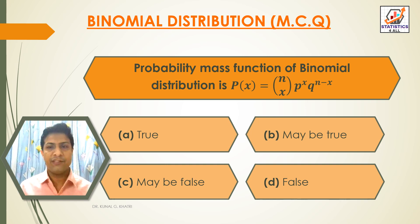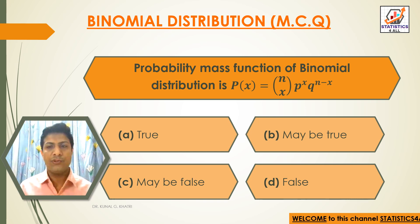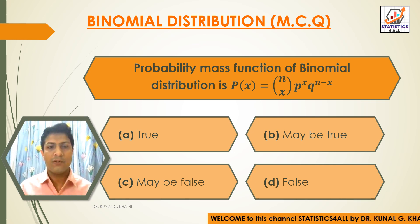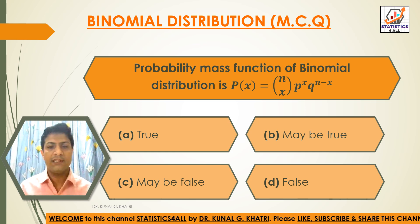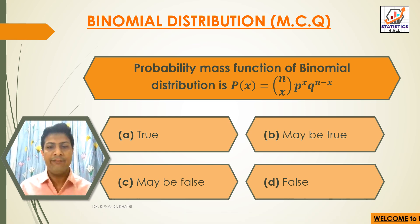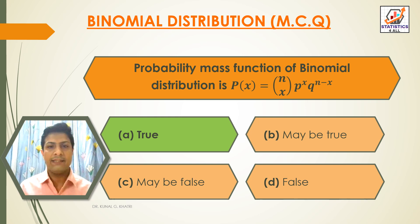Next question: The probability mass function of binomial distribution is P(X) = NCX · P^X · Q^(N−X). Option A: True. Option B: May be true. Option C: May be false. Option D: False. The answer is option A — True. P(X) = NCX · P^X · Q^(N−X) is true.